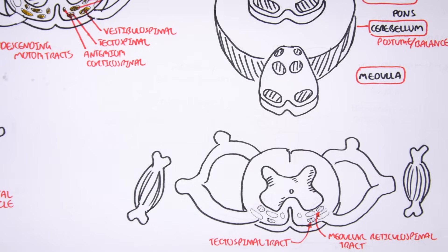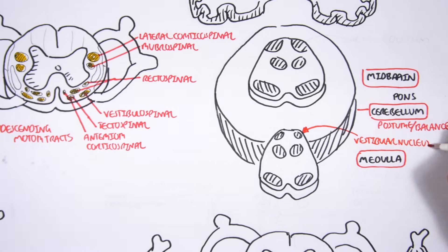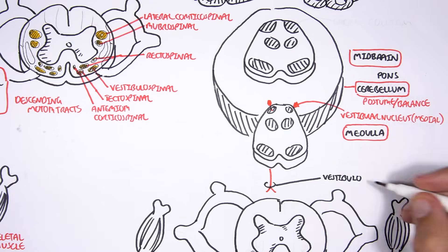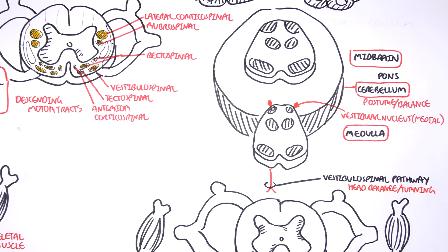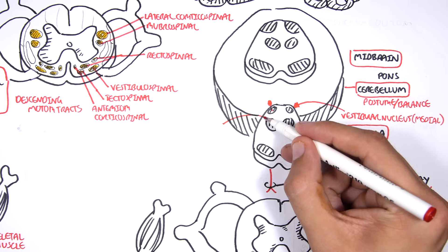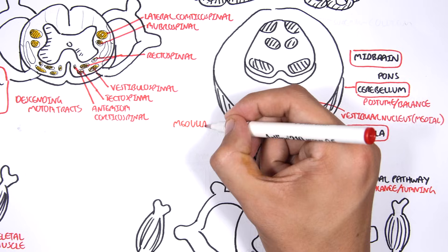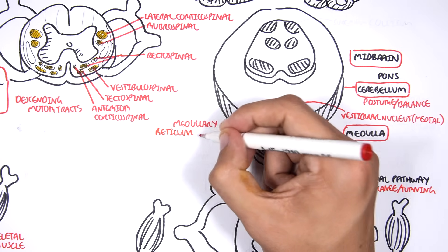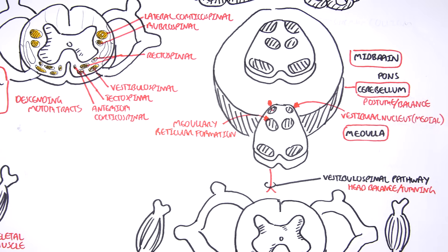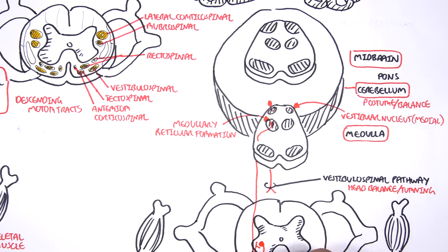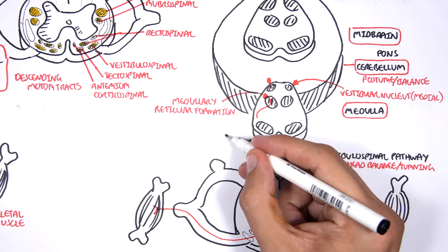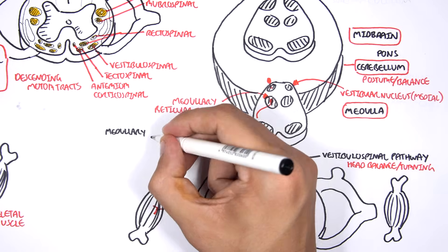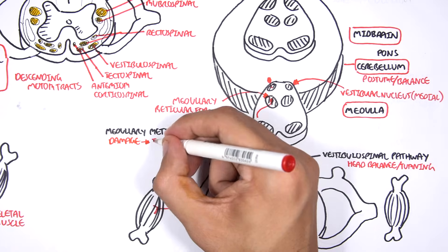The vestibulospinal pathway originates from the medulla's vestibular nucleus. It descends down and synapses with a second neuron in the spinal cord. The vestibulospinal tract is responsible for maintaining head balance and turning. The reticulospinal tract can either originate from the medulla or the pons — so it can be medullary or pontine. Here I am drawing the reticulospinal tract originating from the medulla, from an area known as the medullary reticular formation. It travels down and lands on the medullary reticulospinal tract before synapsing with a second-order neuron on the ventral horn, then targeting an axial muscle responsible for posture and balance. If the reticulospinal tract is damaged, a harmless stimulus can elicit a flexor reflex.